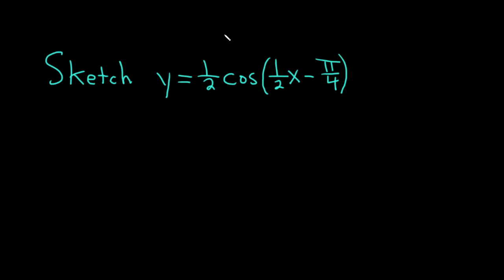In this problem we're going to graph the function y equals one-half times the cosine of one-half x minus pi over 4.